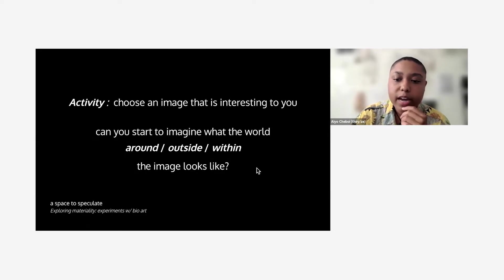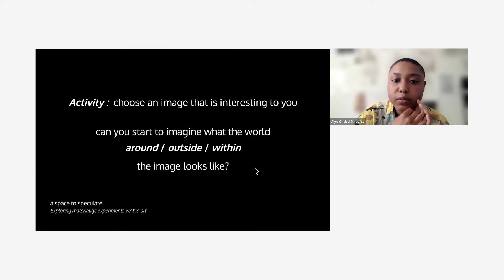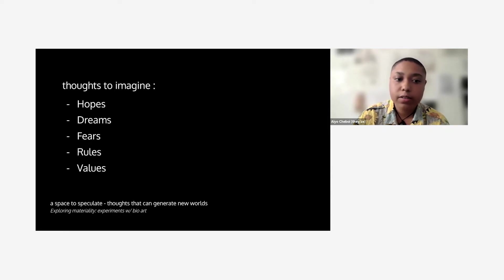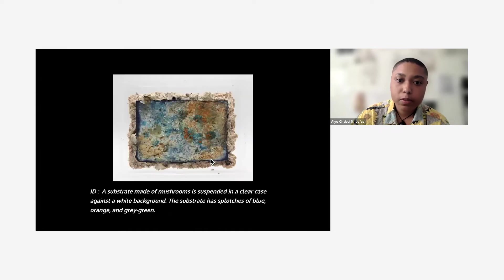I was thinking we could break into smaller groups or keep it in the main room to talk about whether any of these images resonate with you. Would you like to look at them in the Google Doc and fill in what this makes you think of? As a way to think about this further — if we're imagining creating a new world in response to these images — what could the hopes, dreams, fears, rules, or values of those societies be? I'll scroll through so we can look at the images again. How do you feel about this activity? We can guide it as it feels good to all of us.